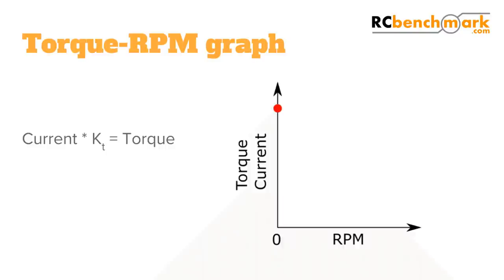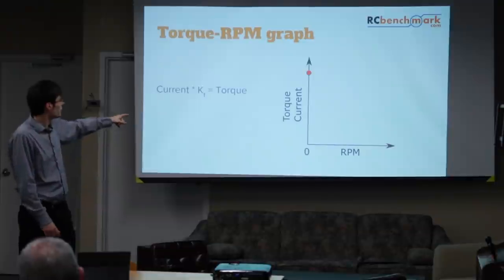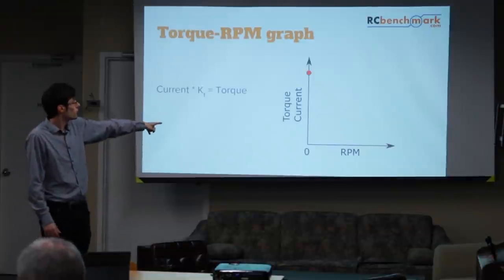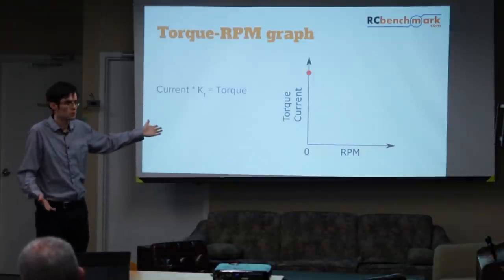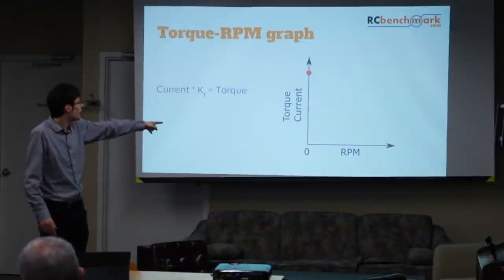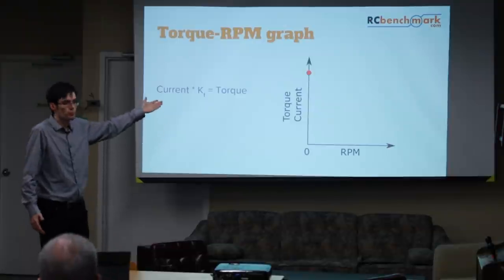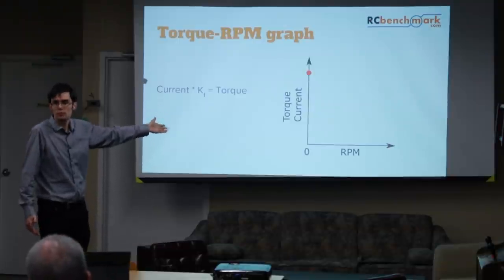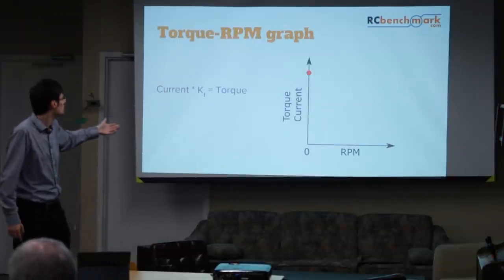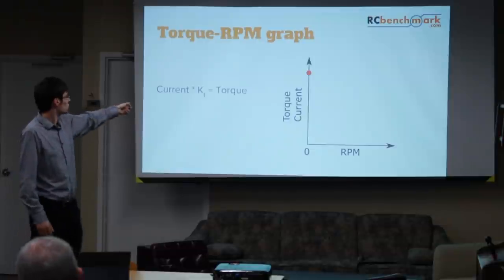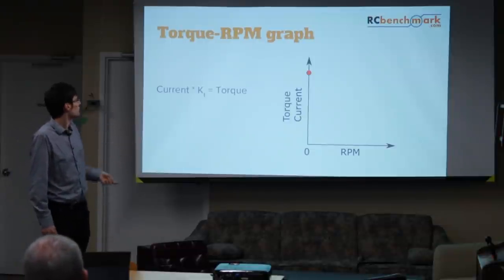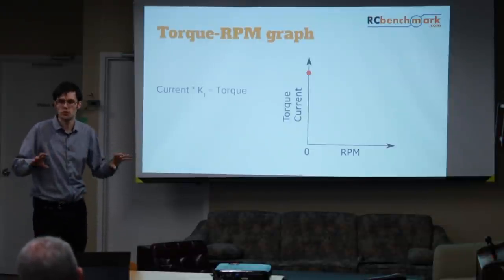Now I'll introduce the torque and RPM diagram. If the motor is stalled, there's no rotation. When you have more current going through, you have more torque — and this is always true. There's a constant relationship between current and torque; they're proportional.